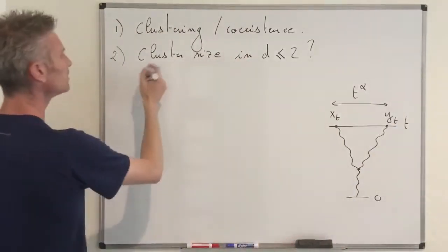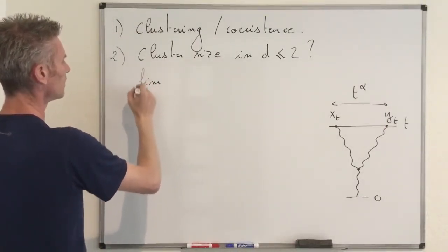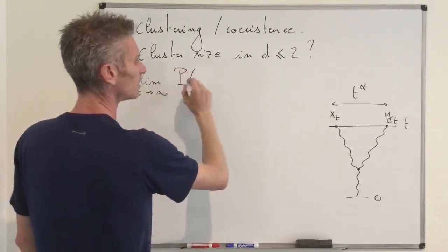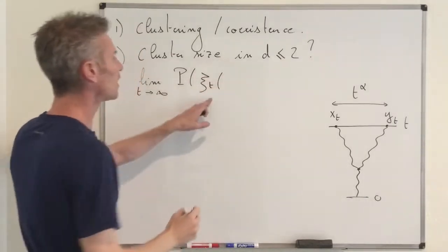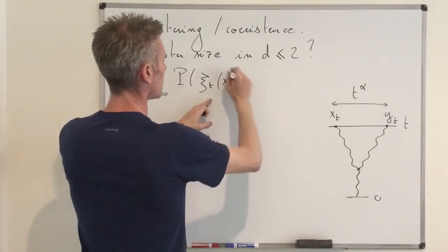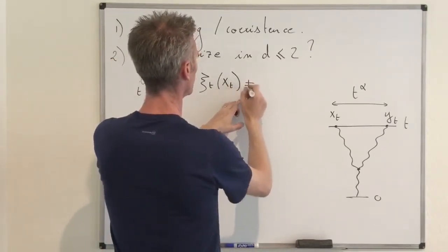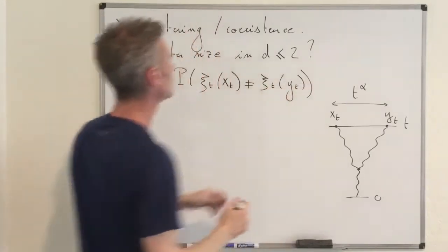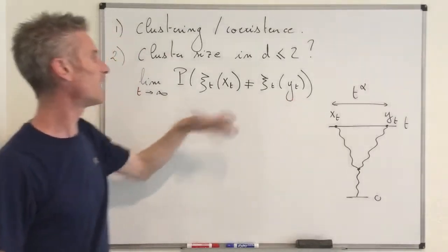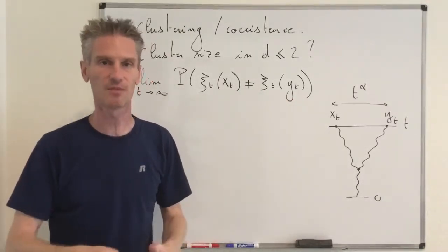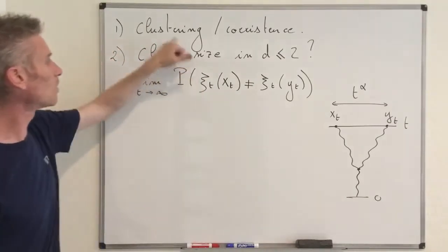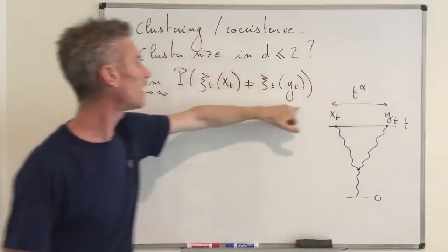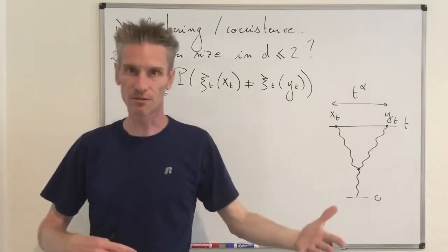Formally, the question about cluster size reduces to looking at the limit as t goes to infinity of the probability that xi_t(x_t) differs from xi_t(y_t). We proved that if x_t and y_t are fixed and do not depend on time, this probability goes to zero in one and two dimensions. The question is: for which values of alpha does this probability go to zero, and for which values does it remain positive?